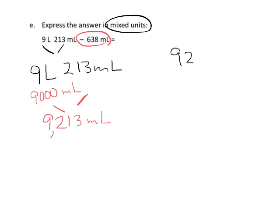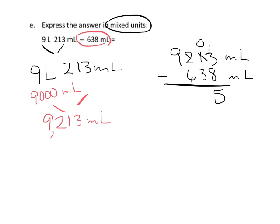So: nine thousand two hundred thirteen minus six hundred thirty-eight — all in milliliters. Three minus eight you can't do, so we regroup: 13 minus 8 is 5. Zero minus 3 means we need to regroup again: that 2 becomes a 1 and the 0 becomes a 10; 10 minus 3 is 7. The 9 becomes an 8 and the 1 becomes an 11; 11 minus 6 is 5, and the 8 comes straight down.